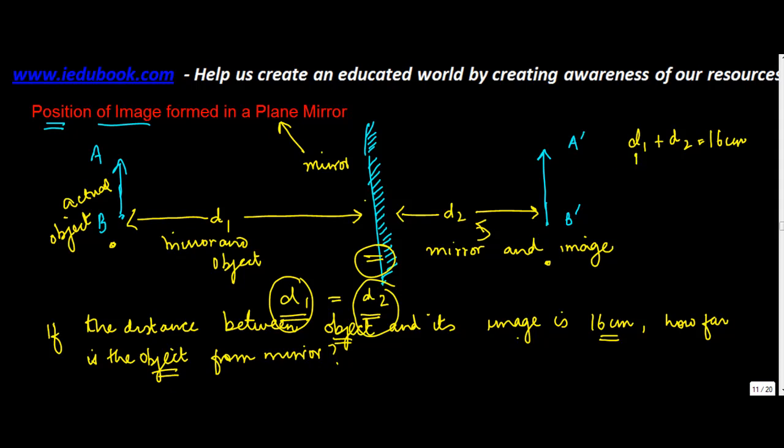So, we need to find out the value of D1. Now, you know that D2 is equal to D1. So, you can write this equation as D1 plus D1 is equal to 16 cm, or 2 times D1 is equal to 16 cm. Therefore, D1 is equal to 16 by 2 or 8 cm.